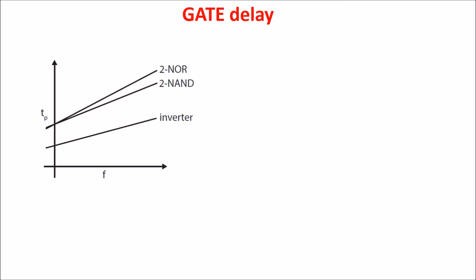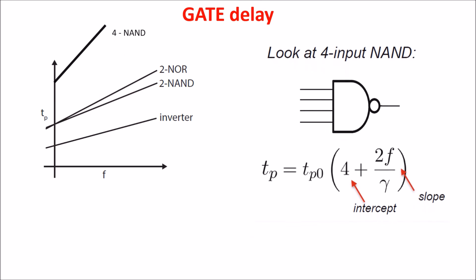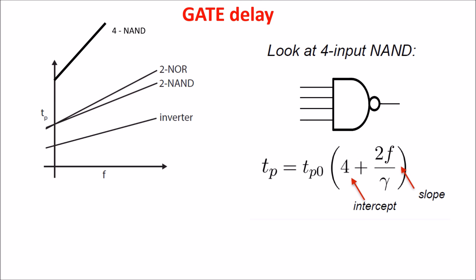For example, a 4NAND gate has this formula, where we see that the intrinsic delay is 4 times the inverter intrinsic delay and the slope is 2. So, here you can see the fastest gate is the inverter followed by the NAND. That's why the NAND is so used in digital electronics.